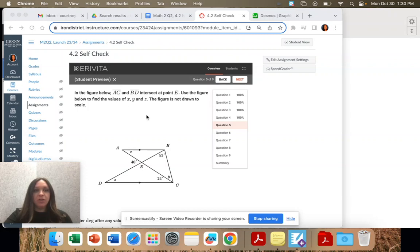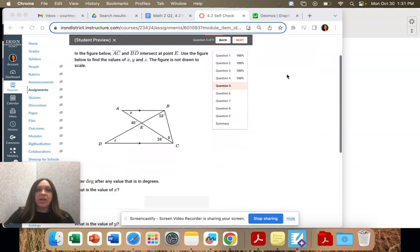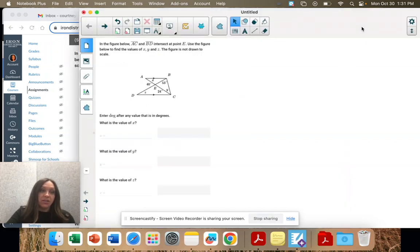Question 5. In the figure below, AC and BD intersect at point E. Use the figure to find X, Y, and Z, and it's not drawn to scale.